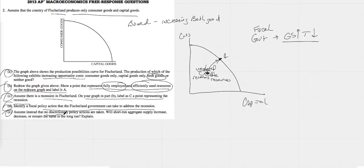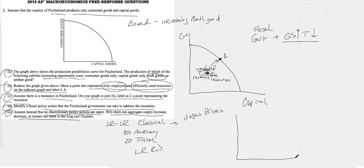Assume instead that no discretionary policy actions are taken. Will short-run aggregate supply curve increase, decrease, or remain the same in the long run? This is that short-run to long-run classical view of if there's no monetary policy or no fiscal policy, what happens in the long run. When we're talking about classical, we know wages and prices are flexible. Let's go through it real quickly. They're not asking you for much. All they're asking you for is the short-run increase, decrease, or remain the same.